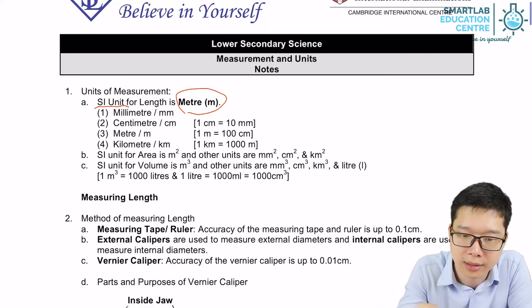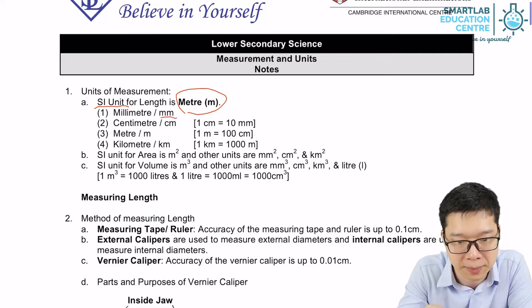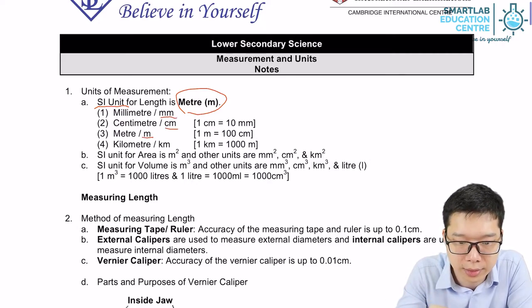But obviously, other than meter, we can have different prefixes. For example, mm, cm, meter itself, kilometer.